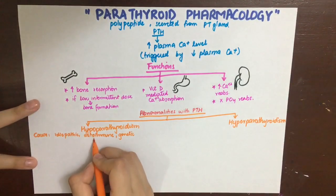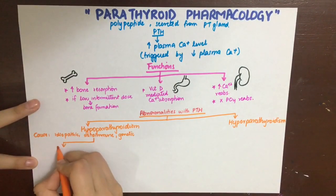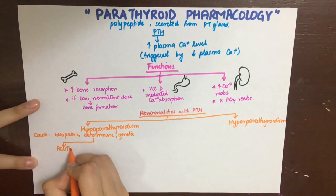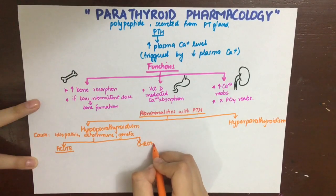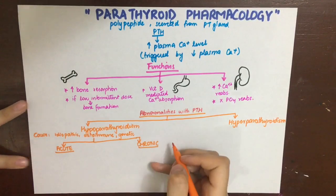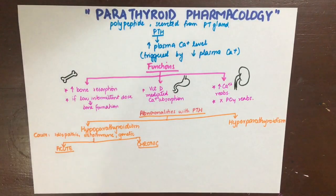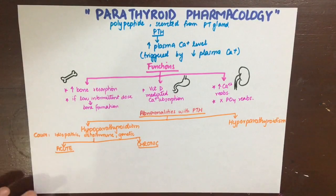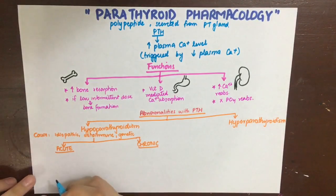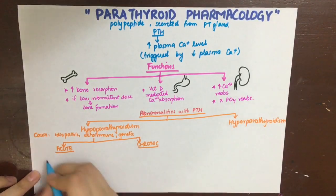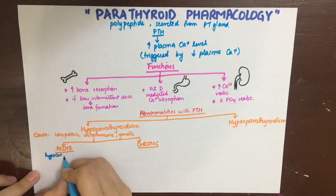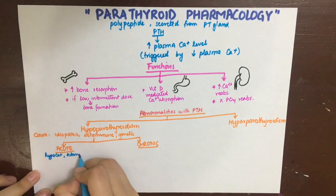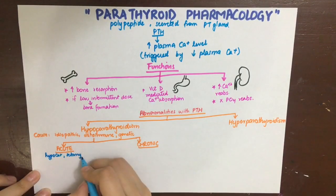Based on the mode of onset, it can be divided into acute and chronic hypoparathyroidism. The acute patient will present with hypocalcemia, tetany, and carpopedal spasm — severely painful cramps of the muscles of the feet and hands — and laryngospasm.